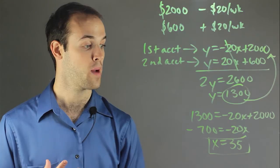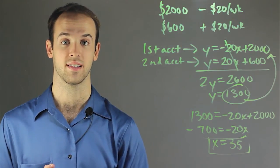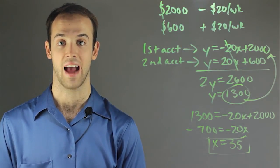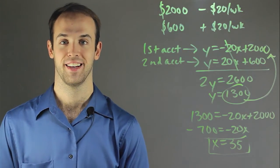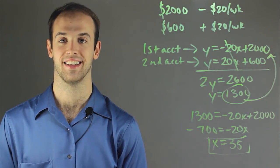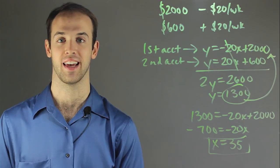So now I don't have to worry about it. I know that after 35 weeks the two bank accounts will have the exact same amount which is $1,300. So I'm Drew Moyer and this is Students Learn Life Skills in a Math Curriculum.